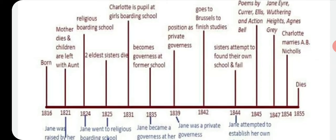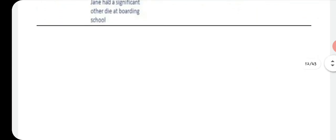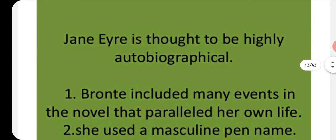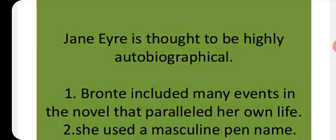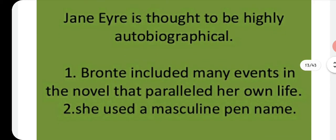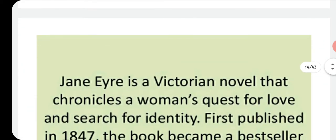The circumstances in Charlotte Brontë's real life are very similar to those depicted in Jane Eyre, so we can say that Jane Eyre is essentially a short autobiography of Charlotte Brontë. The novel is thought to be highly autobiographical, and Brontë included many events that paralleled her own life. She also used a masculine pen name as mentioned.